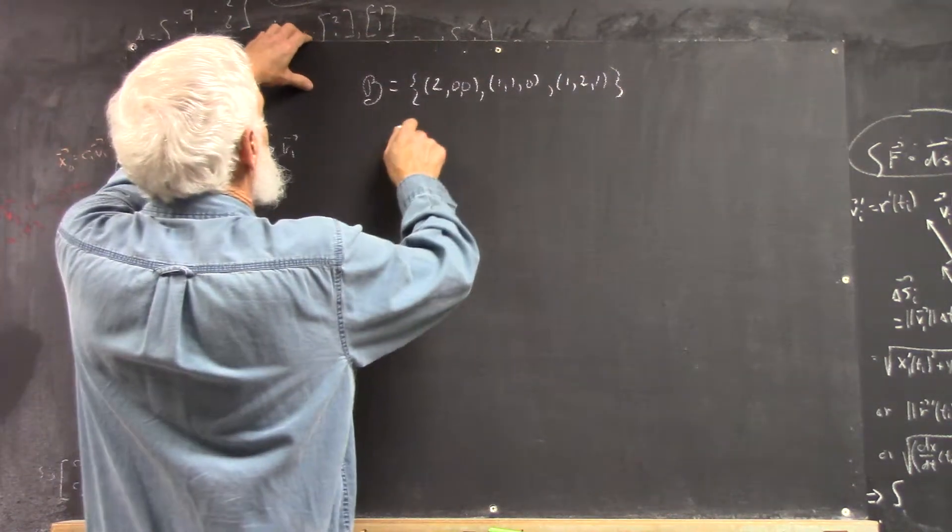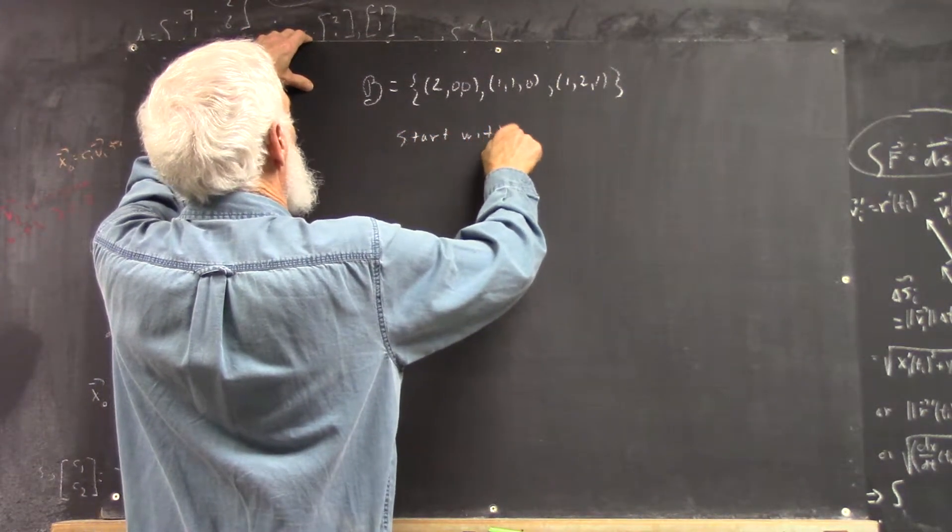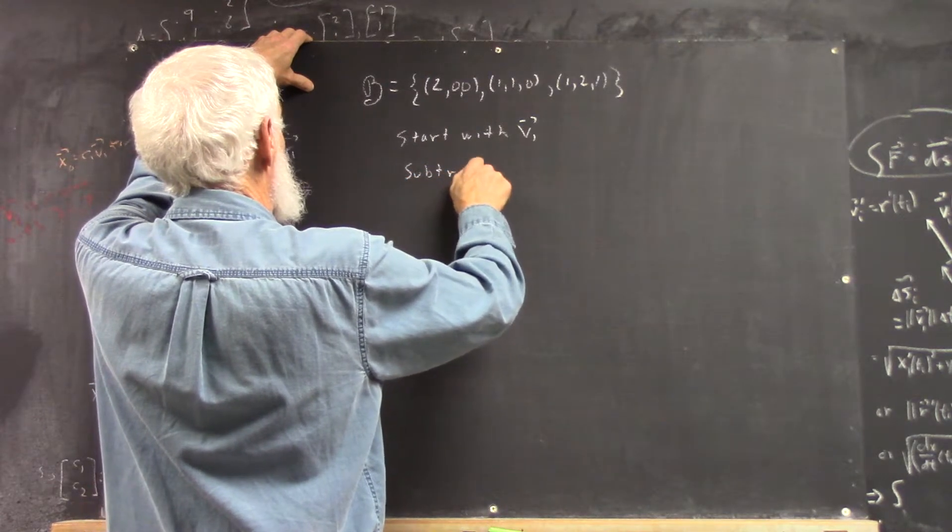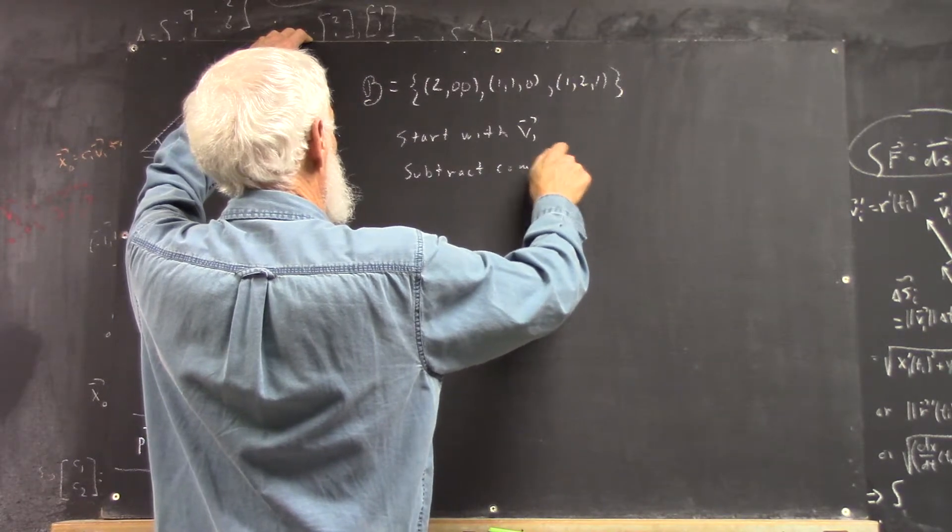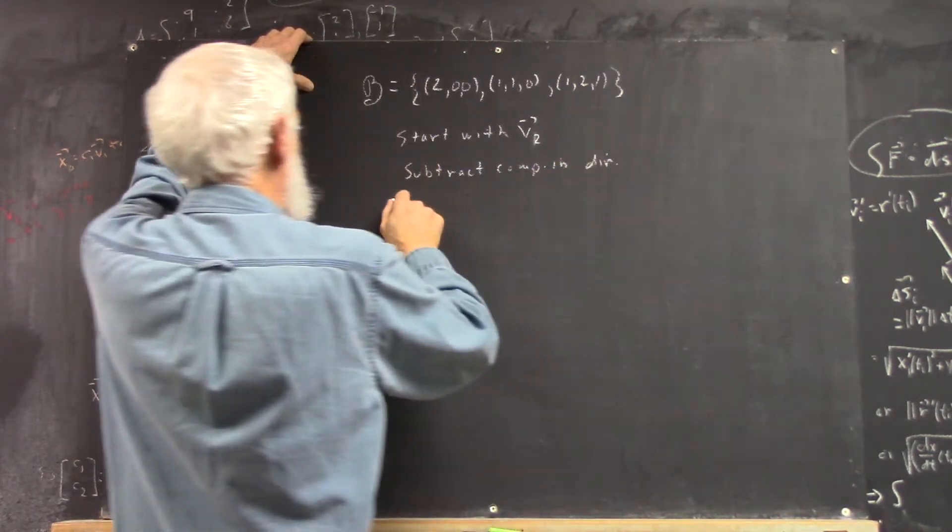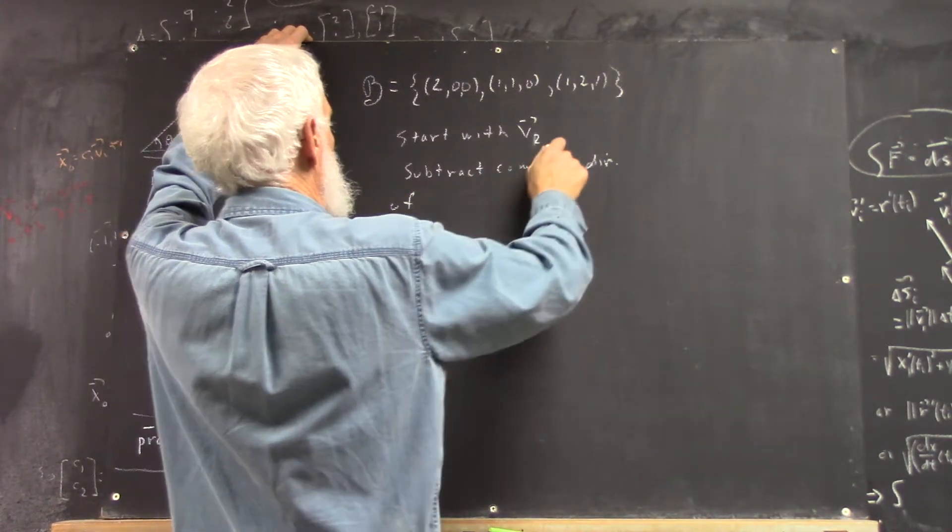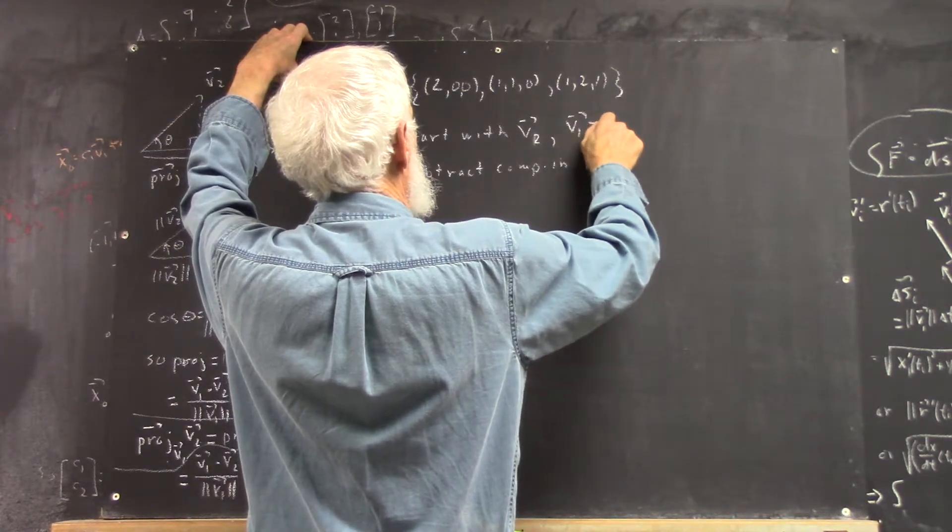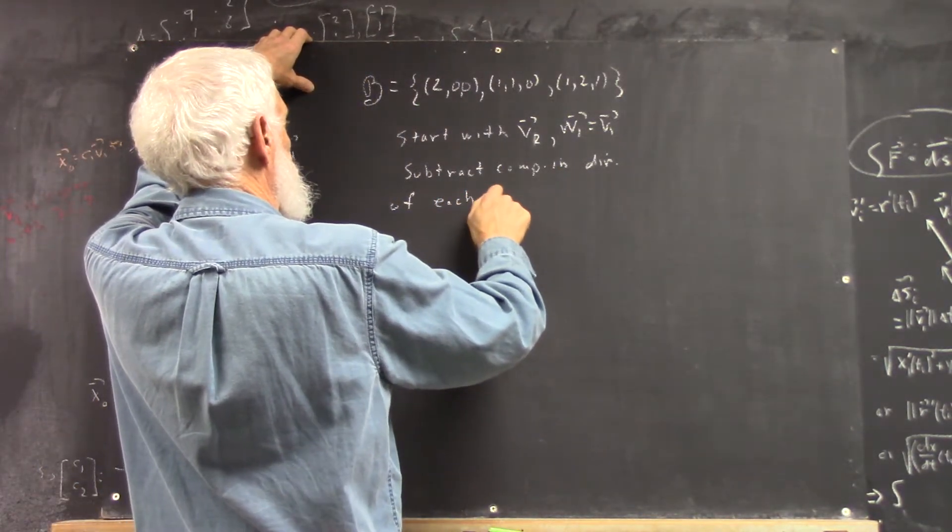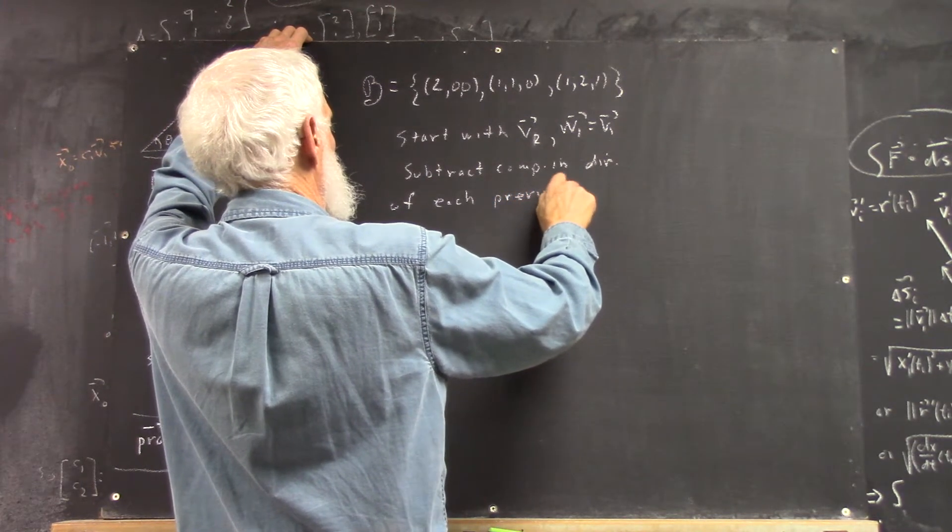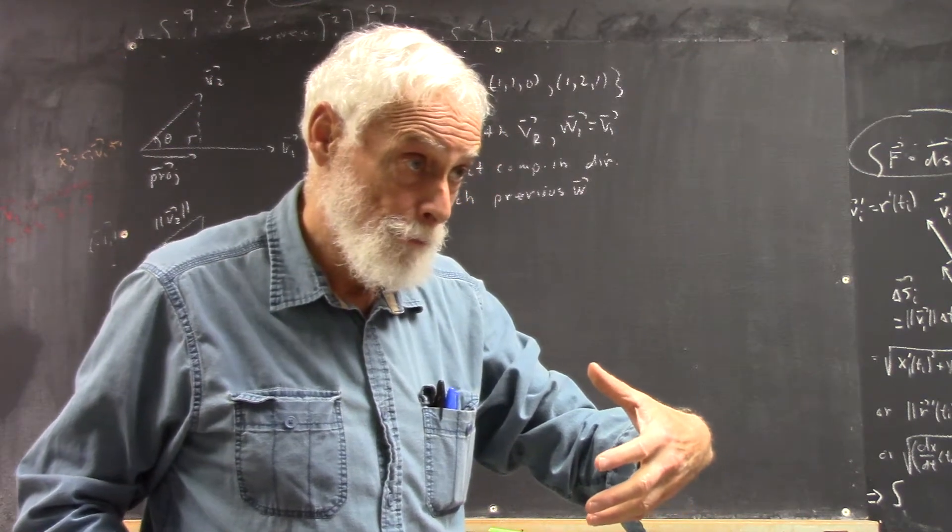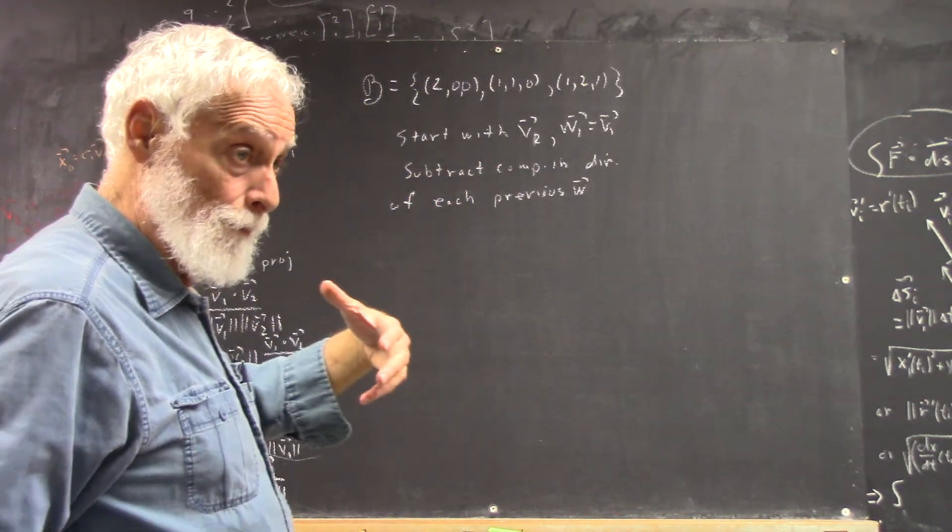You start with the component, subtract the component in the direction. Let's say this. W's are going to be our new vectors, orthogonal basis vectors. And you get that.